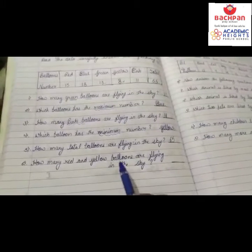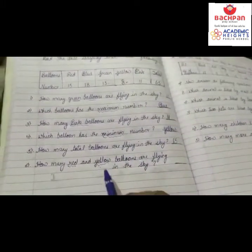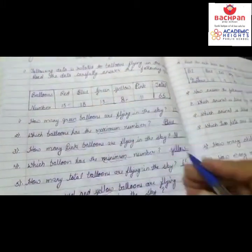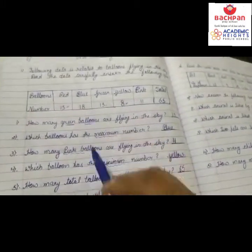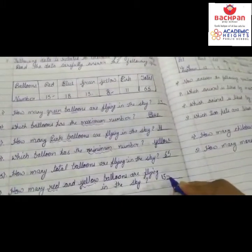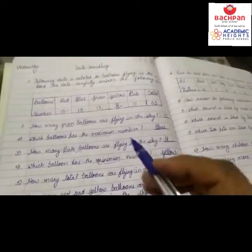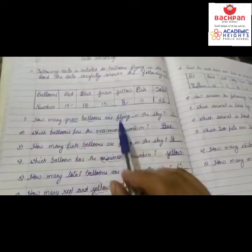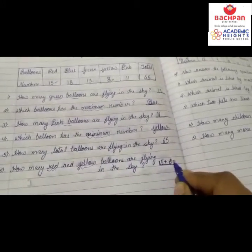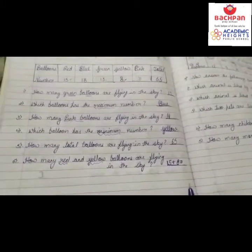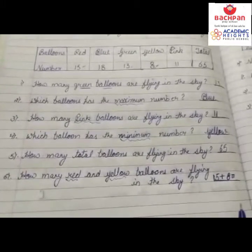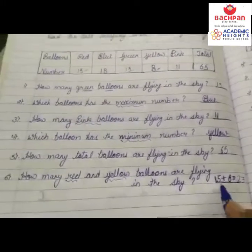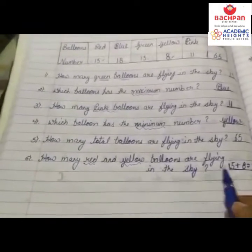Next question: How many red and yellow balloons are flying in the sky? So bachchi, red कितने हैं? 15. Right here, 15. And yellow कितने हैं? 8. So 15 plus 8 — दोनों के total कितने हैं red and yellow. Red 15 है, yellow 8 है, तो 15 को 8 से add कर देंगे। 15 और 8 कितने हो गए? 23. Right here, 23. Red and yellow balloons total: 23.